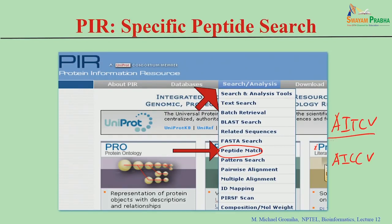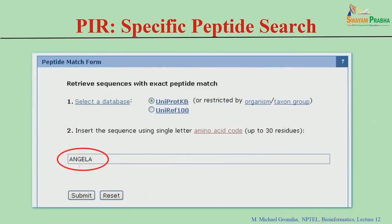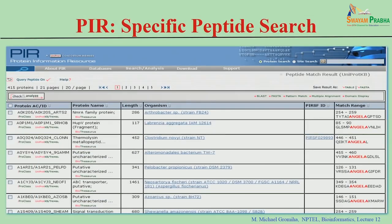So here you can do the peptide match — you give the peptides and find the exact match. In pattern search you can write it as A-I*-C-V, which can include variations, but in the case of peptide match only the exact sequence is acceptable. You give specific peptides, search any database, and find proteins that have exactly those same peptides.